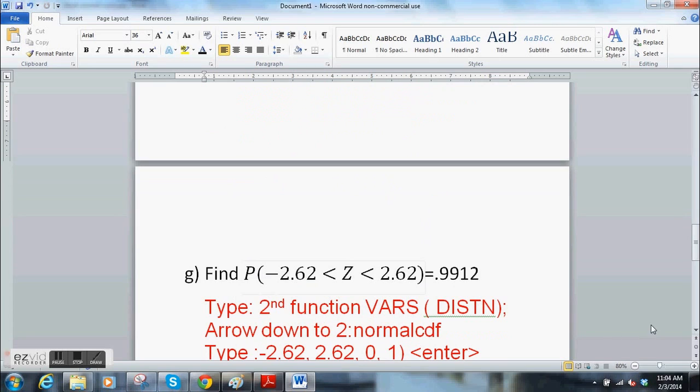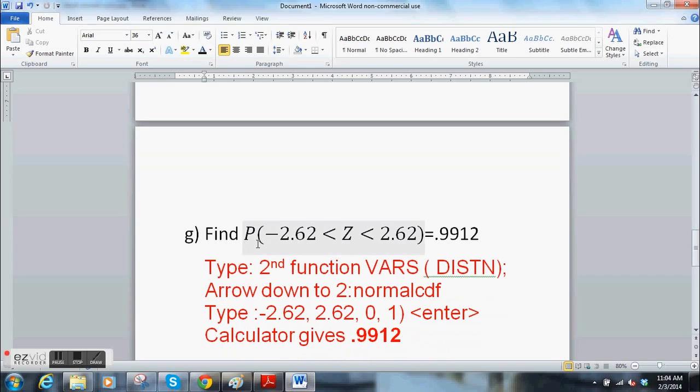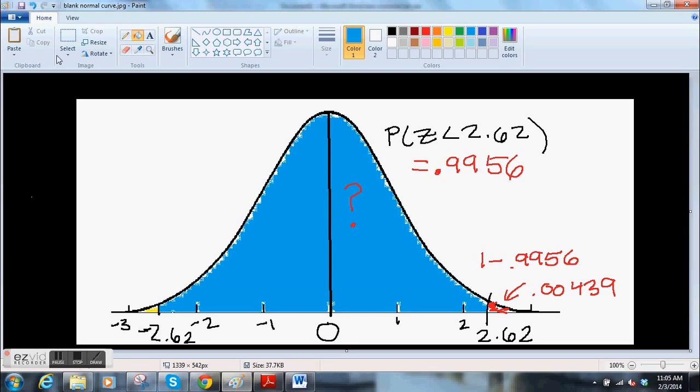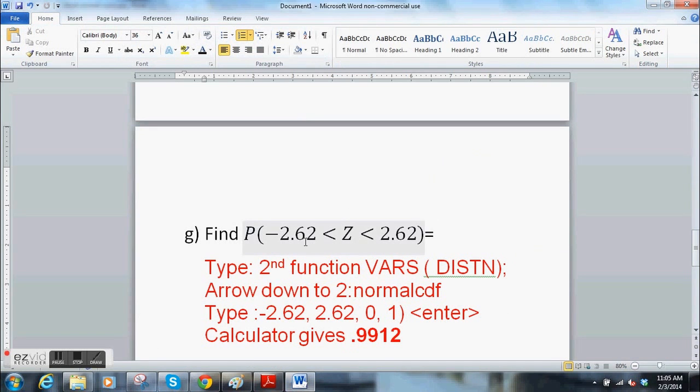The next problem, a boundary. This one's easier, actually, on the calculator. Harder on the table, easier on the calculator. Find the probability that Z is between minus 2.62 and 2.62. So in this case, here's our minus 2.62. We want everything in between here. That area. That's the area we want.